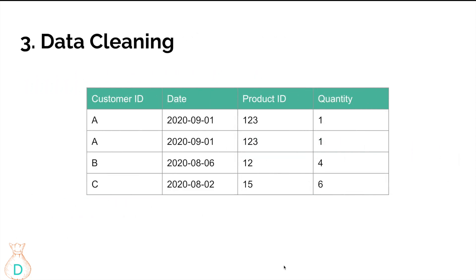The third challenge is data cleaning. When you look at a table and see a customer ID made a purchase of the same product twice in one day, is that actually true or is it a bug where the event was just logged twice? This is the kind of question you need to ask yourself constantly, or even ask your data engineer how accurate the table actually is.